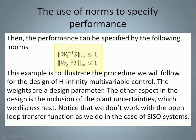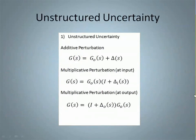The performance can be specified by the following norms. This example illustrates the procedure we will follow for the design of H-infinity multivariable controllers — the weights are a design parameter. The other aspect in the design is the inclusion of plant uncertainties. Notice that we don't work with the open-loop transfer function as we do in the SISO case. To describe the uncertainty of the plant we have different ways. First, there is what is called unstructured uncertainty, which includes the additive perturbation and the multiplicative perturbation at the input and at the output.